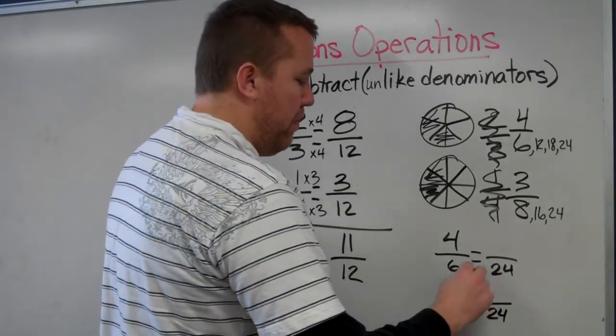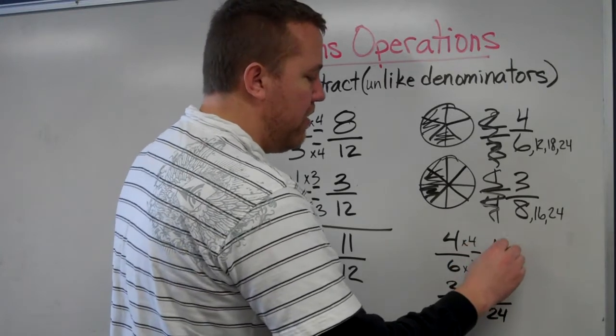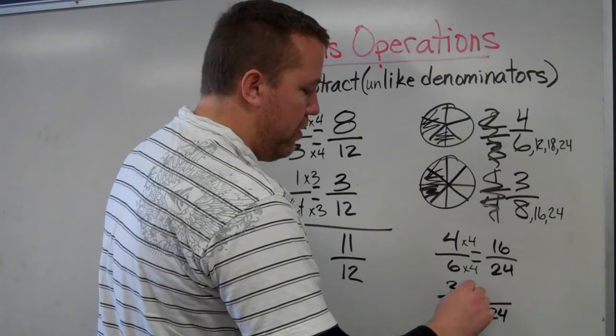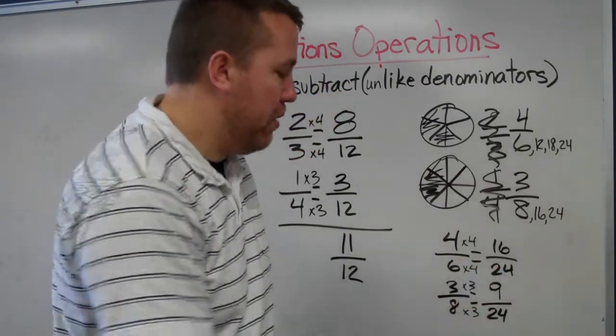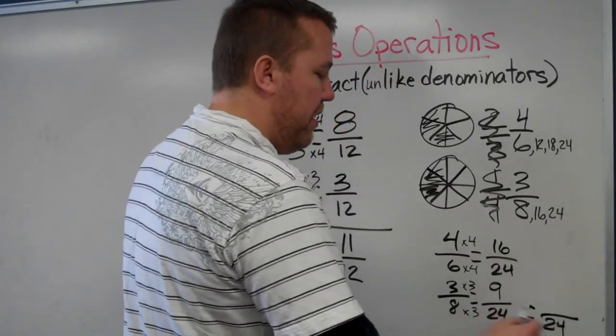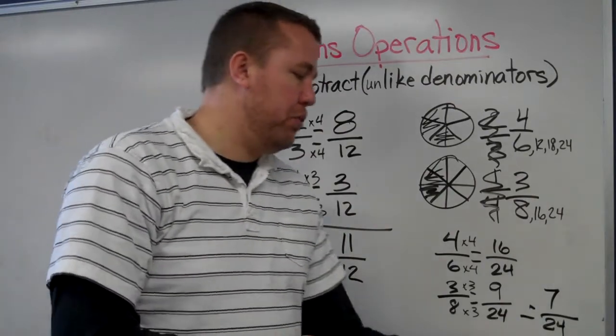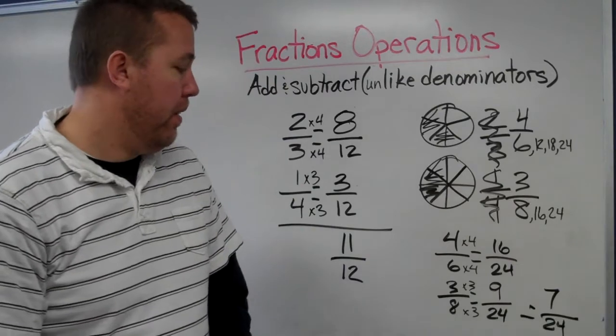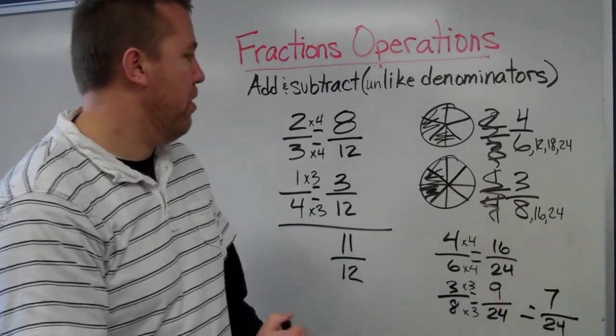Six times four equals twenty-four. I times the top by four - sixteen twenty-fourths. And eight times three equals twenty-four, so three times three equals nine twenty-fourths. Then I subtract: sixteen minus nine equals seven twenty-fourths. This one also doesn't need to be simplified - seven is a prime number and doesn't go into twenty-four evenly.